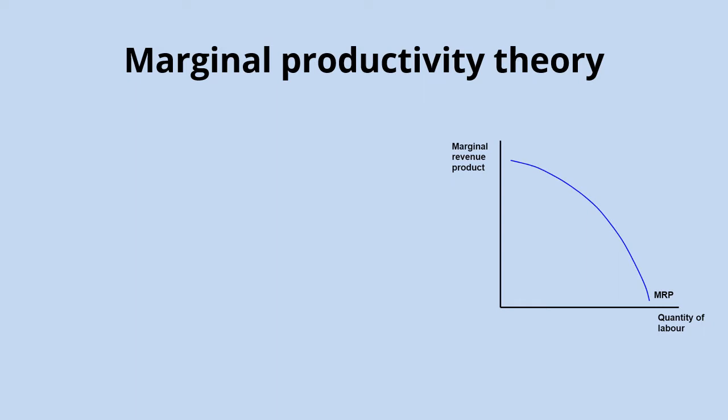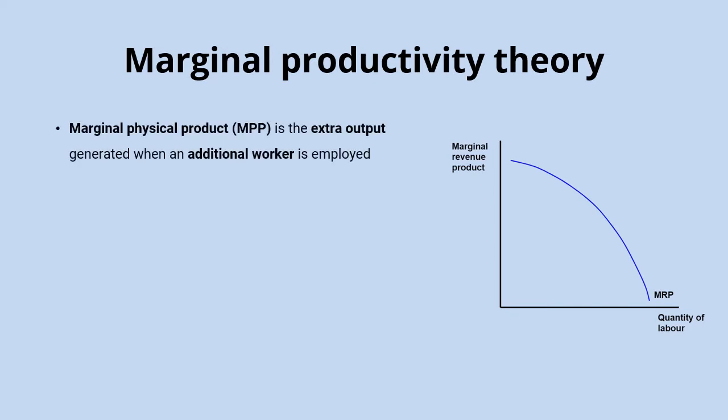We're going to look at the demand side first. But before we get there, we need to understand what we mean by marginal productivity theory. We'll start with the marginal physical product of labour, which is the extra output that's generated when an additional worker is employed — so that firm employs one more worker, how much extra output is going to be generated.